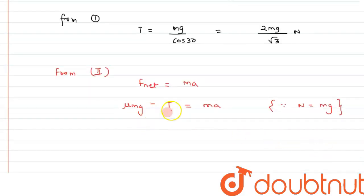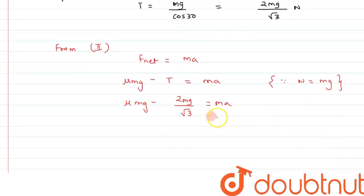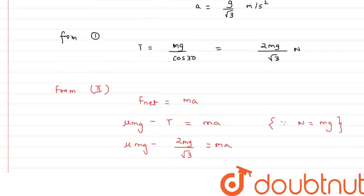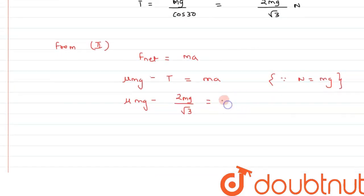So now, from here we can substitute the value of T which we have already calculated. So 2 mg by root 3 and that is equals to ma. Now, since also we have calculated the value of A that is g by root 3, so we can write mg by root 3. We can give a reason over here since A is g by root 3 and T is 2 mg by root 3.